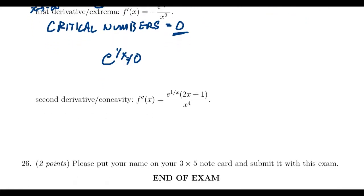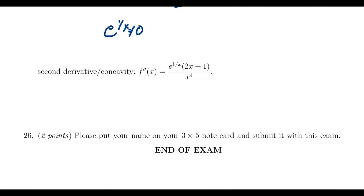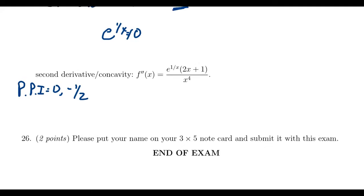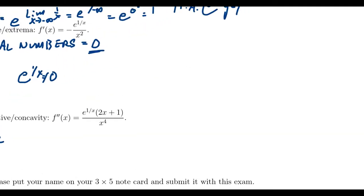Moving to the second derivative: what makes it equal 0 or undefined? Setting x equals 0 again makes the second derivative undefined, so we list this as a potential point of inflection. We also have the factor 2x plus 1, which equals 0 when x equals negative one-half. So that gives us another potential point of inflection. With these values, we're going to build a sign chart.